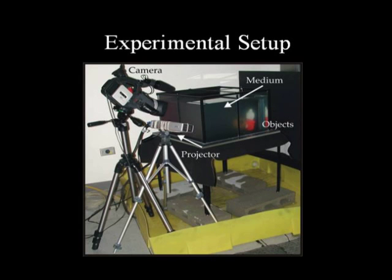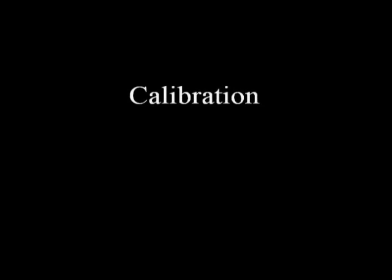We have extended two structured light methods — light striping and photometric stereo — to work in scattering media. Our light stripe range-finding experiments were done using a glass tank filled with scattering media such as dilute milk, a projector, and a video camera. The desired objects are placed within the medium. The calibration of our setup requires only scans of two planar surfaces whose equations in world coordinates are measured beforehand.